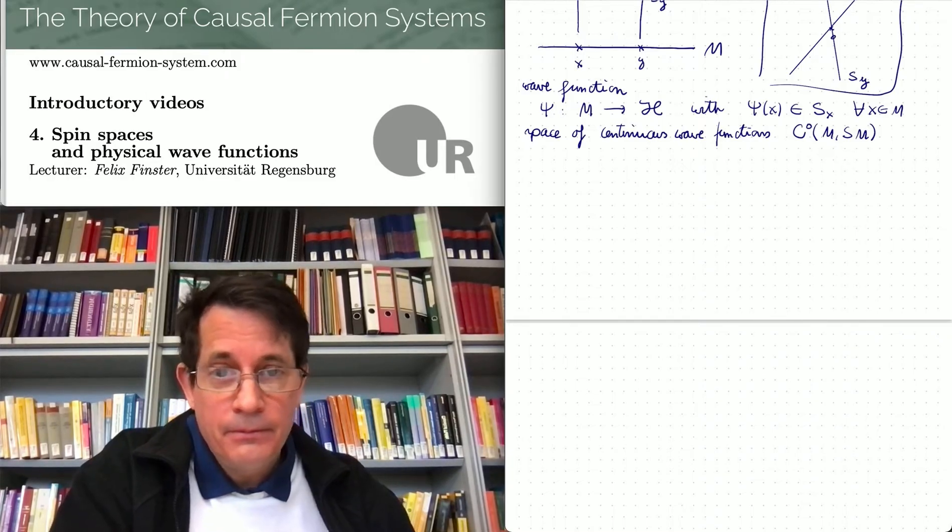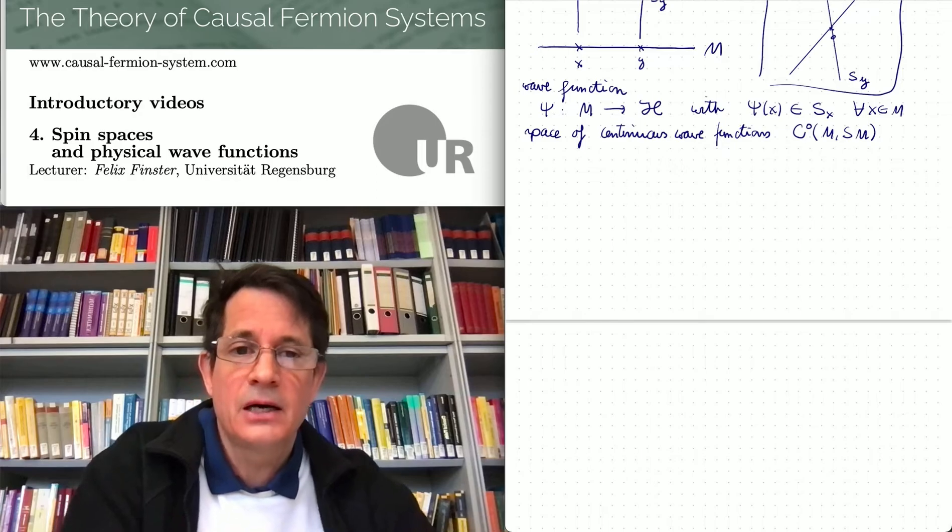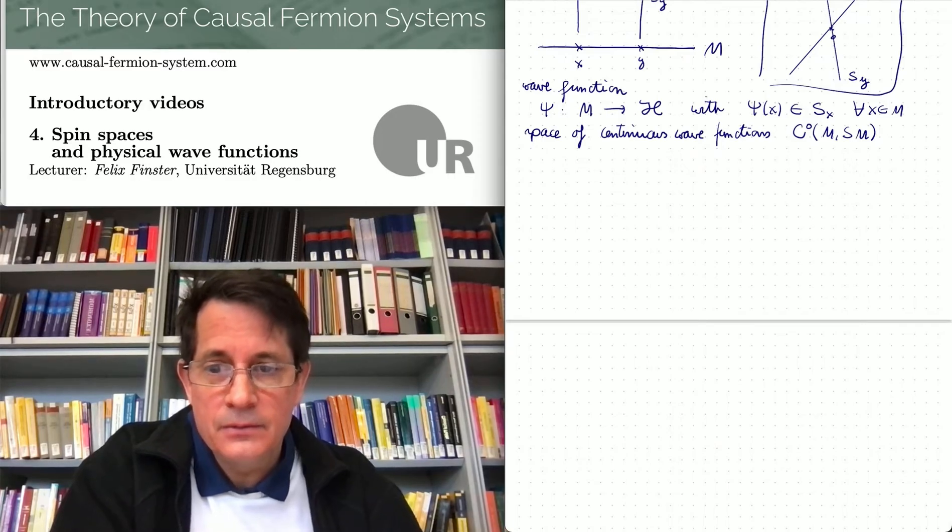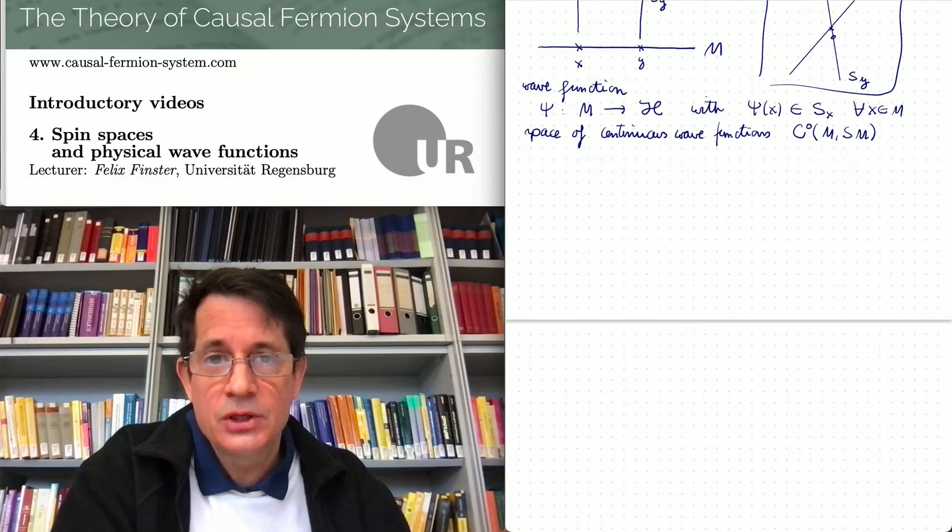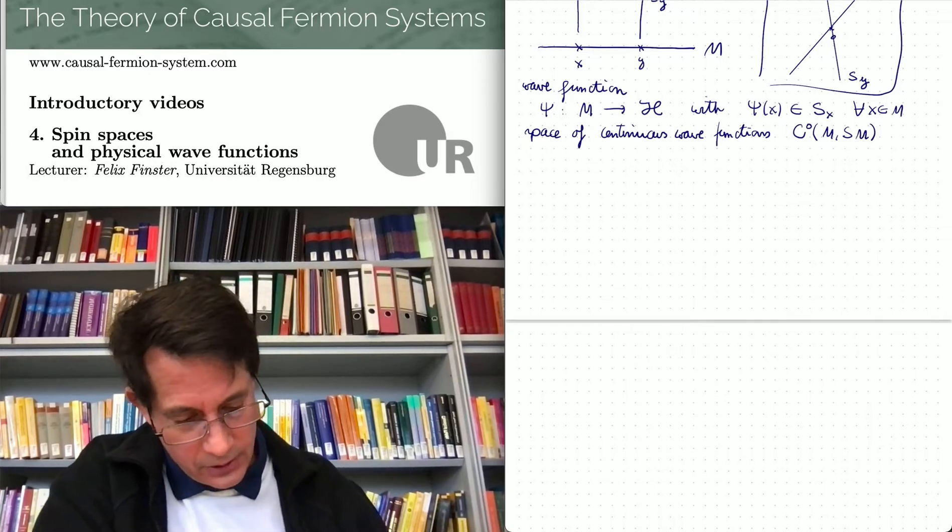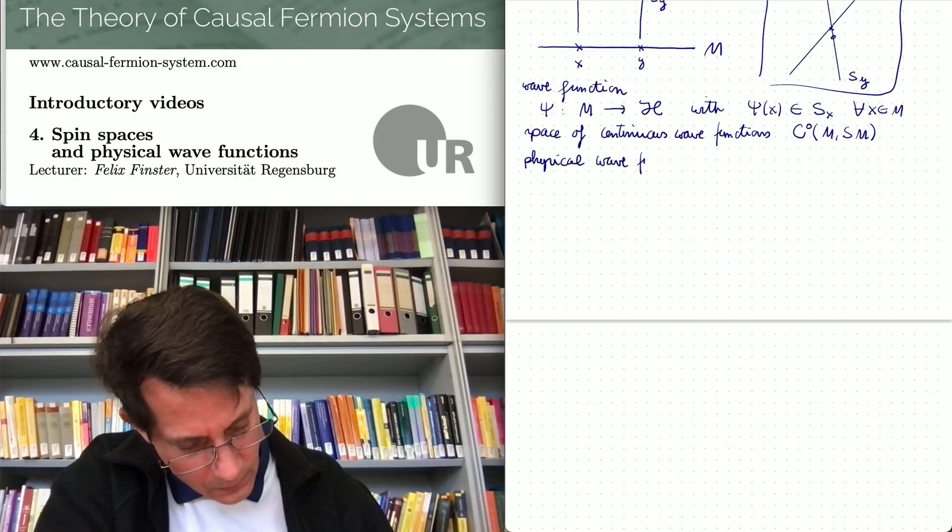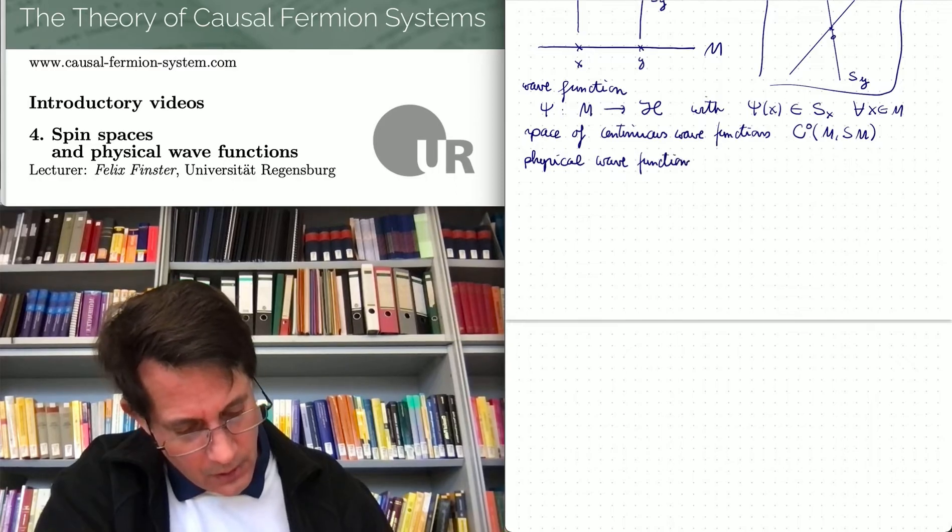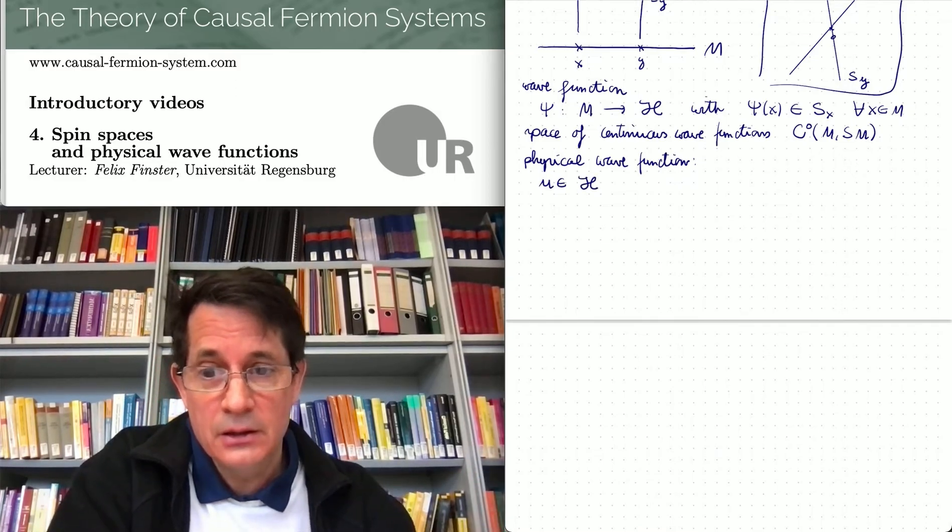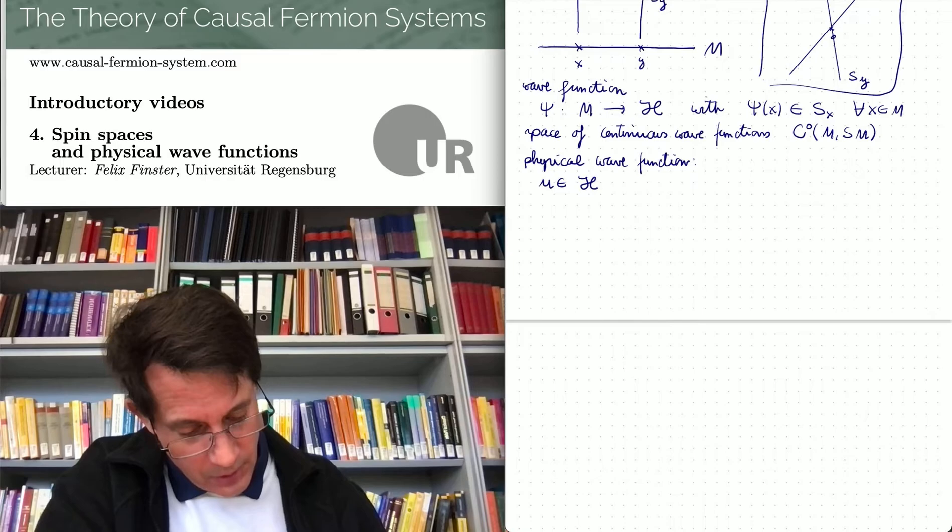Now these are all the possible wave functions. If we want to do physics, we want to be more specific. There should be distinguished wave functions which describe the quantum mechanical particles of our system. Therefore we want to have certain distinguished wave functions. This can be done. They arise naturally here and they are called physical wave functions.